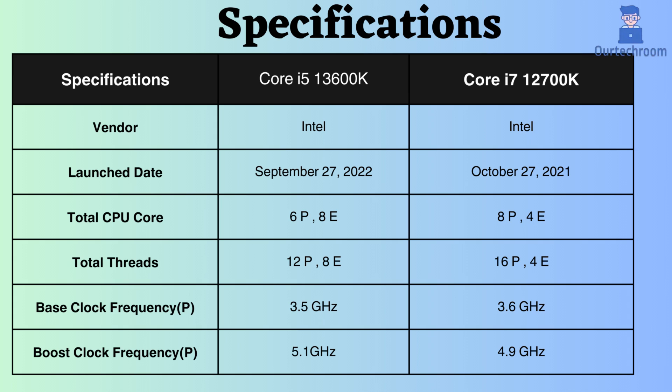The Core i5-13600K was released 11 months after the Core i7-12700K. The Core i5-13600K features 6 performance cores and 8 efficiency cores, while the Core i7-12700K has 8 performance cores and 4 efficiency cores. Additionally, the Core i5-13600K has 12 performance threads and 8 efficiency threads, whereas the Core i7-12700K has 16 performance threads and 4 efficiency threads. Having more cores and threads allows the processor to handle multiple tasks simultaneously and efficiently.